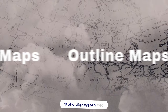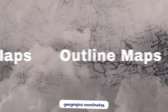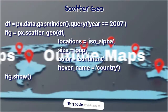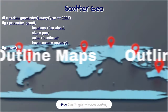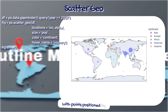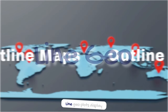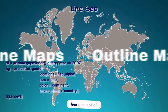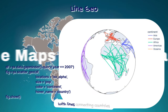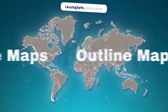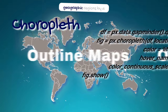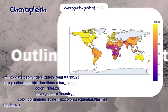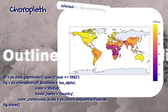Plotly Express can also create outline maps using geographic coordinates. Scatter geoplots display points on a geographic map — this code creates a scatter geoplot of the 2007 Gapminder data, with points positioned by country and sized by population. Line geoplots display lines on a geographic map connecting countries on each continent. Choropleth plots color geographic regions by a variable — this code creates a choropleth plot of 1992 Gapminder data, with countries colored by life expectancy.